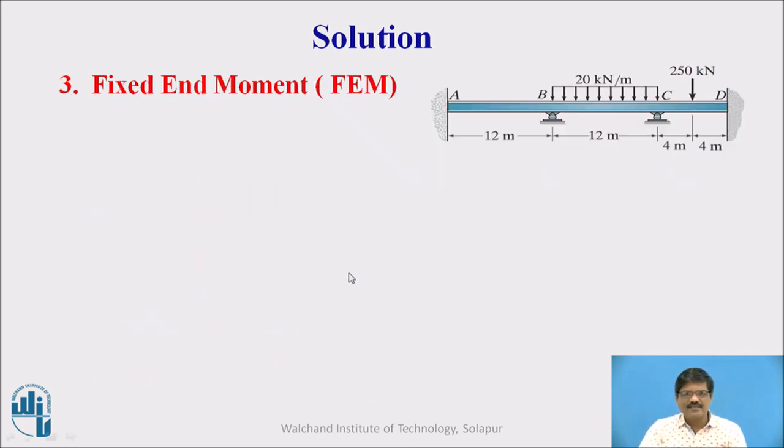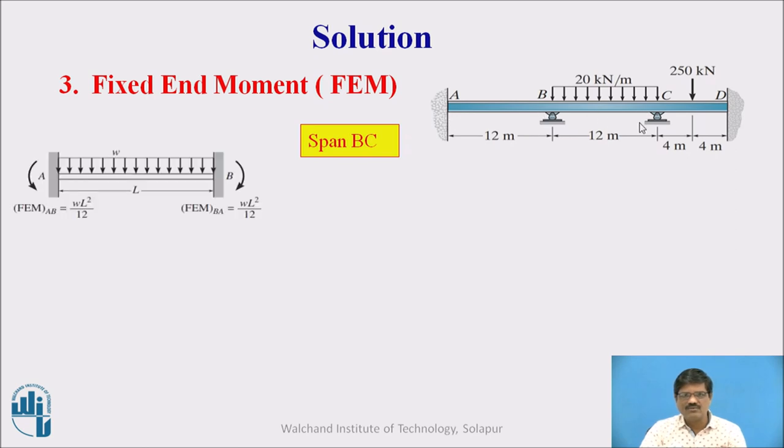Then the next step is to calculate the fixed end moments. Now we know that for AB there is no load therefore fixed end moment for AB span is not present.